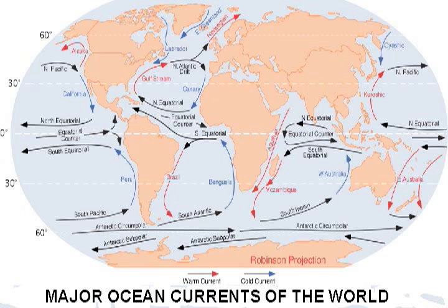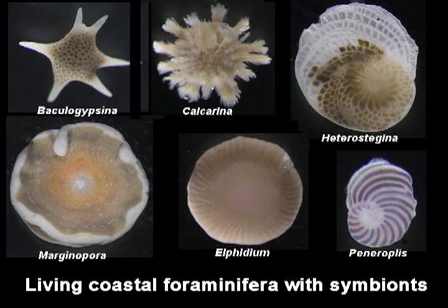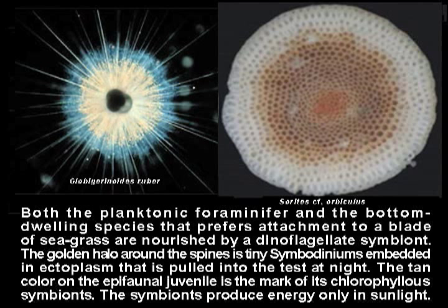Many of the larger species of living benthonic genera house chlorophyll-using symbionts, so it is inferred that larger fossil species in Mesozoic and Cenozoic strata also harbored them. Today, the foraminifera choose their helpful guests among species of red or green algae, of diatoms, or of dinoflagellates. These tiny partners aid their hosts by providing them additional food — mainly starch — and in turn are protected from harm. Some large planktonic foraminifera too host a symbiont. During the day these are exposed to light in a layer of rhizopodal ectoplasm covering the test; at night the ectoplasm and its cargo is drawn into the test.